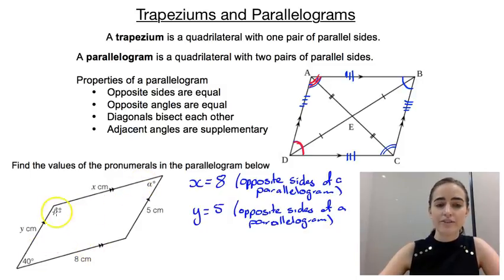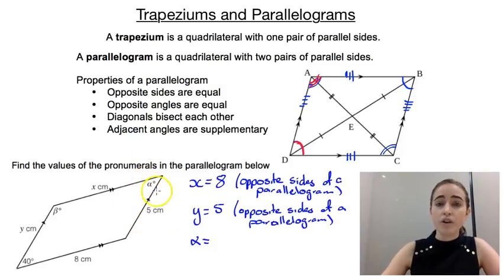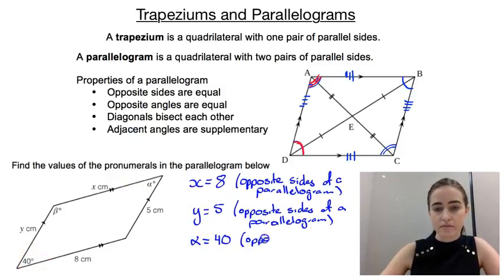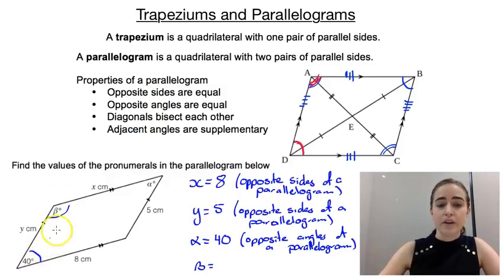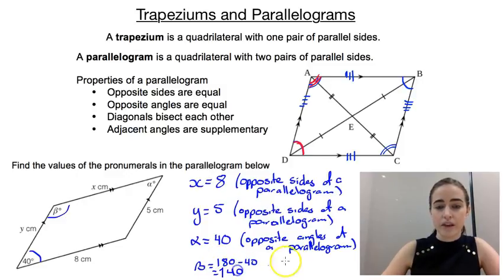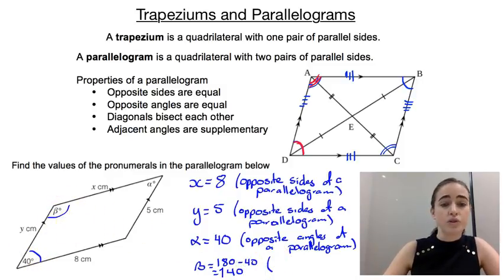If we then look at angles, we've got alpha and beta. Looking at alpha first — alpha has to be equal to 40 because they're opposite angles of a parallelogram. For beta, looking at beta and the 40 degrees: because they're adjacent angles in that parallelogram, they must be supplementary. So beta would be 180 minus 40, which gives us 140. The reason is adjacent angles in a parallelogram are supplementary, or equivalently co-interior angles in parallel lines.